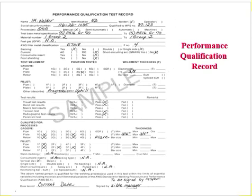This is the Performance Qualification Record format — you can see: name, test weld, filler metal, and all details are mentioned. This is a sample of the performance qualification record. Each welder may have many such records depending on how many variations of conditions they were tested under. Performance records should be maintained for each welder on your payroll.